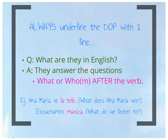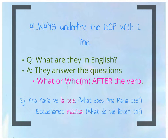You are always going to underline your DOP — which is direct object pronoun — with one line. When we get into learning indirect object pronouns and you have to identify both in a sentence, it's easier if you have an underlining system. One line for DOPs.